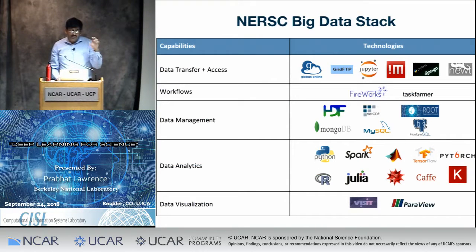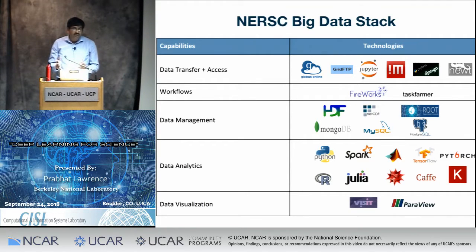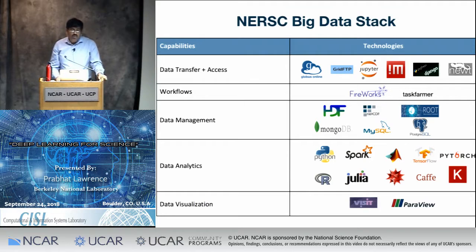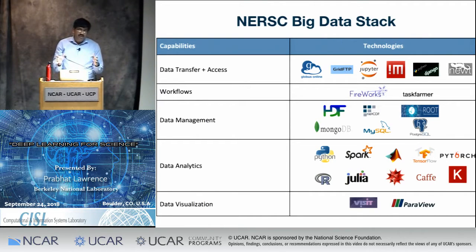To accommodate these use cases, one of the primary things my group has done in the last three years is articulate what a data stack needs to be for data-intensive science. While this talk is about deep learning and machine learning, it's not just a matter of training a deep learning model and being done. You need to move your data, share datasets with your community, share your code — tools like Jupyter Notebooks are increasingly popular. Workflows are important for automating the movement of data, automating analysis, and retrying if things fail.